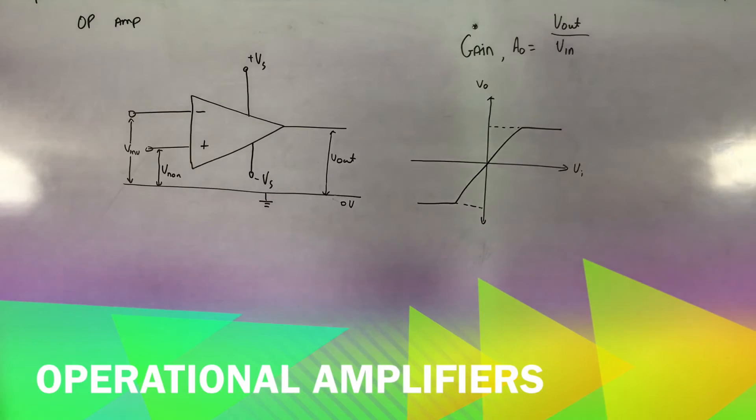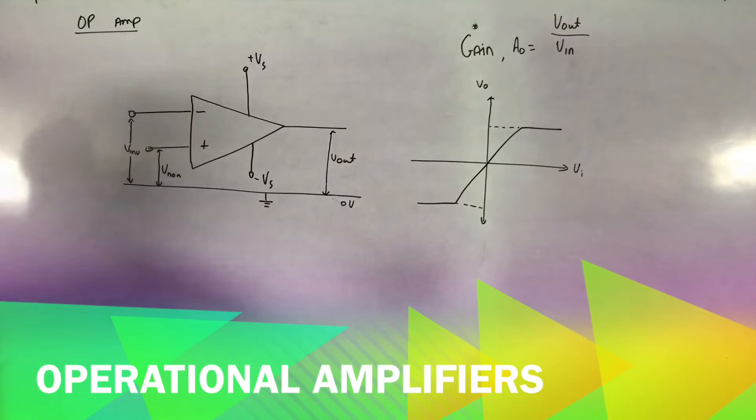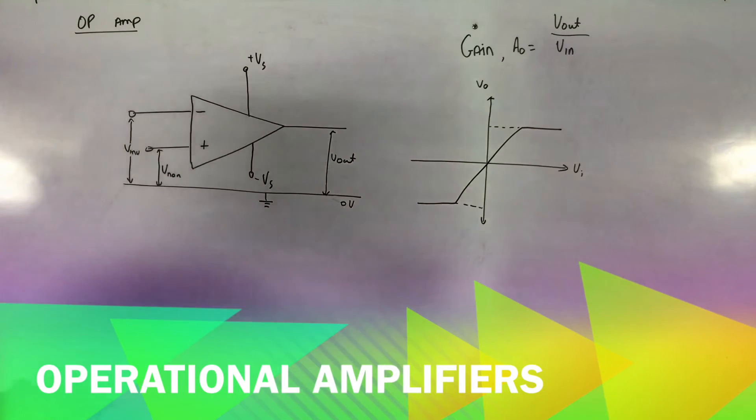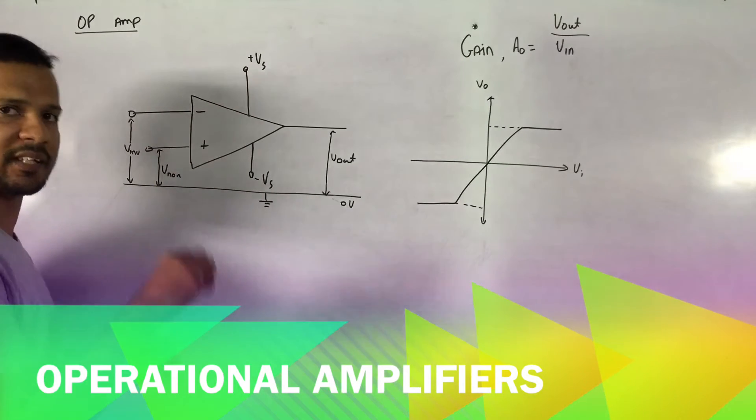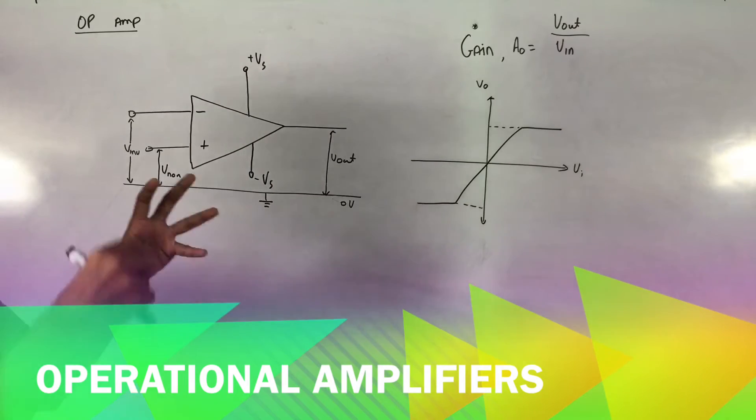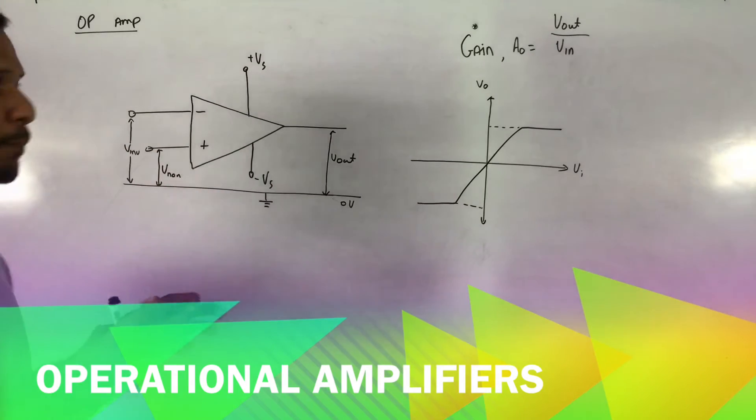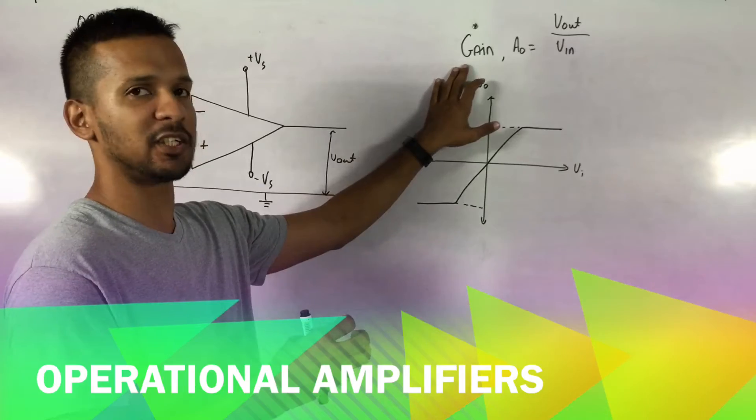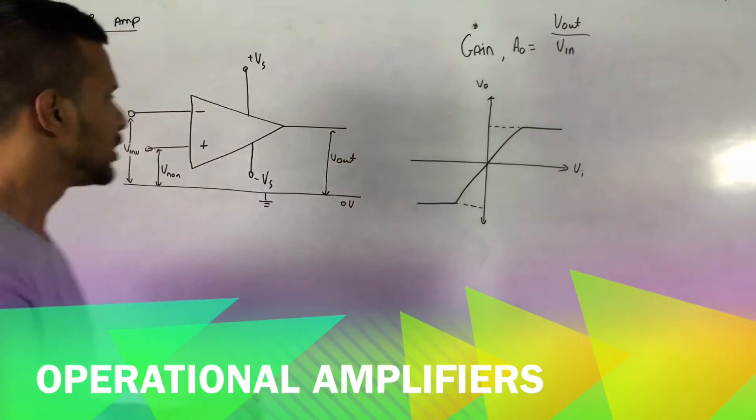Hi. Today we want to take a look at op-amps. So what is an op-amp? An op-amp is simply a device that amplifies something. It takes a very small input and gives you a very large output. And the measure of how much that output is based on the input is called gain. Gain measures the ratio of output and input. So what does it look like?